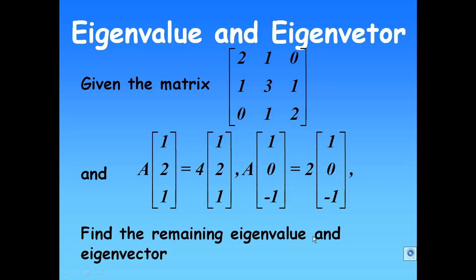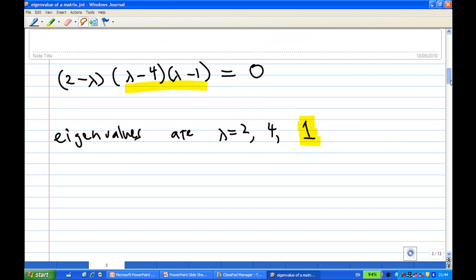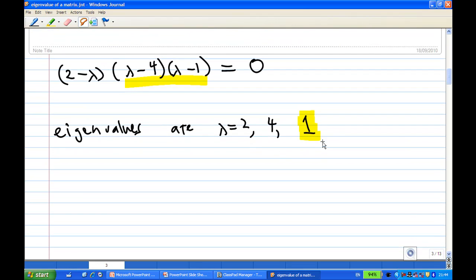Now, from our earlier calculation, we have to solve the characteristic equation and found out that lambda equal to 2, 4, and 1. And we already know that 2 and 4 are eigenvalues, so the remaining eigenvalue is 1.